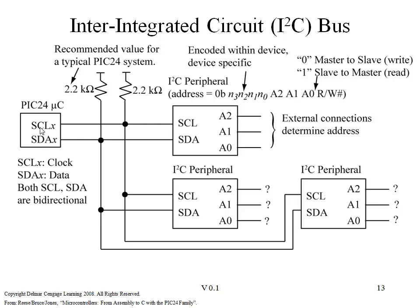The SCL and SDA lines will pull a signal low, but they will not typically drive it high, instead relying on these two resistors to provide the pull-up to power capability of the bus.